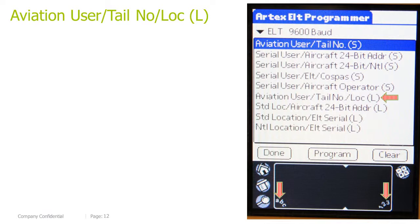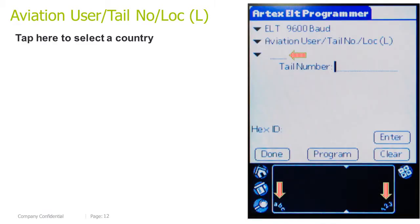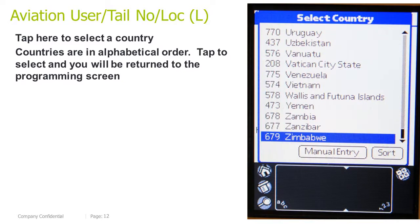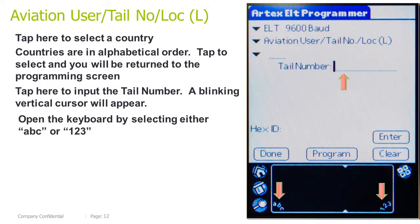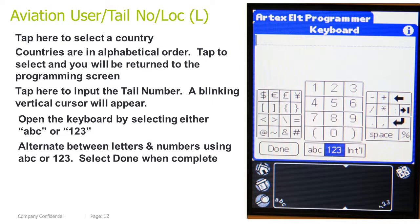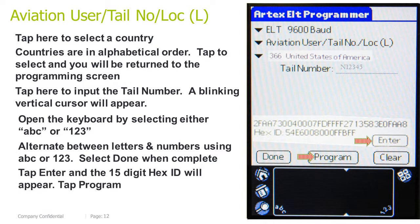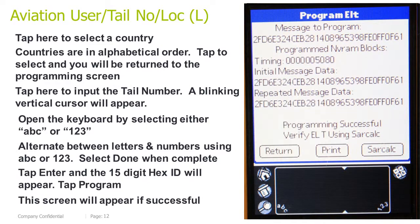Aviation user, tail number, location long. Tap here to select a country — countries are in alphabetical order. Tap to select and you will be returned to the programming screen. Tap here to input the tail number. A blinking vertical cursor will appear. Open the keyboard by selecting either ABC or 123. Alternate between letters and numbers using ABC or 123. Select Done when complete. Tap Enter and the 15-digit HEX ID will appear. Tap Program. This screen will appear if successful.